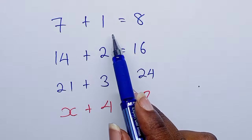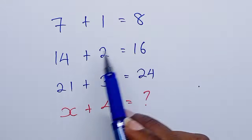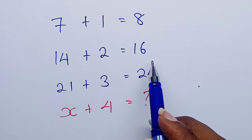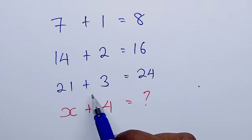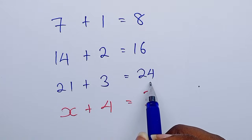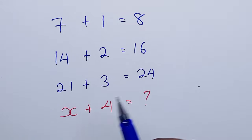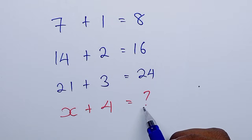7 plus 1 equals 8. 14 plus 2 equals 16. 21 plus 3 equals 24. X, which we don't know, plus 4 — what do you think they are equal to?